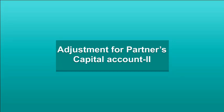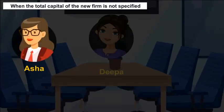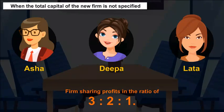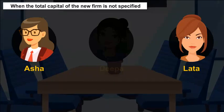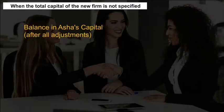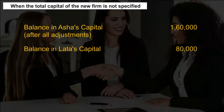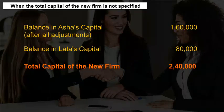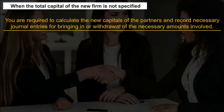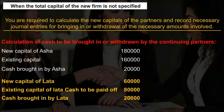Situation B: When the total capital of the new firm is not specified. Example: Asha, Deepa and Lata are partners sharing profits in the ratio of 3:2:1. Deepa retires. After making all adjustments relating to revaluation, goodwill and accumulated profit, the capital accounts of Asha and Lata show a credit balance of Rs. 1,60,000 and Rs. 80,000 respectively. It was decided to adjust their capitals in the new profit sharing ratio. Calculate the new capitals and record necessary journal entries.